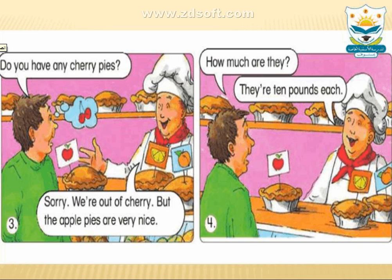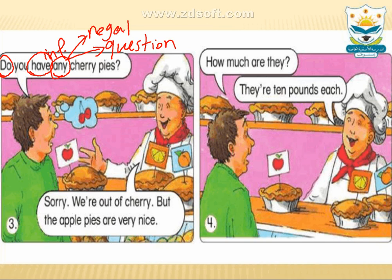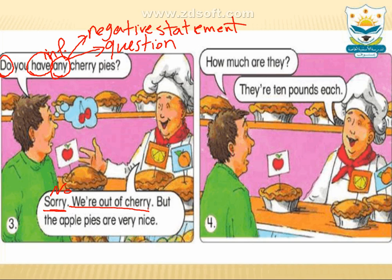Next picture: 'Do you have any cherry pie?' Notice 'do' — the verb is in the infinitive. Also notice 'any' — it is used in questions and in negative statements. 'Do you have any cherry pies?' The answer is sorry, meaning no: 'We're out of cherry' — it means we don't have cherry pies.